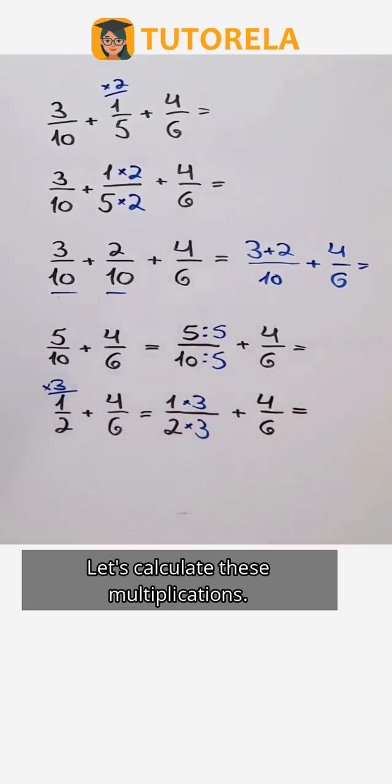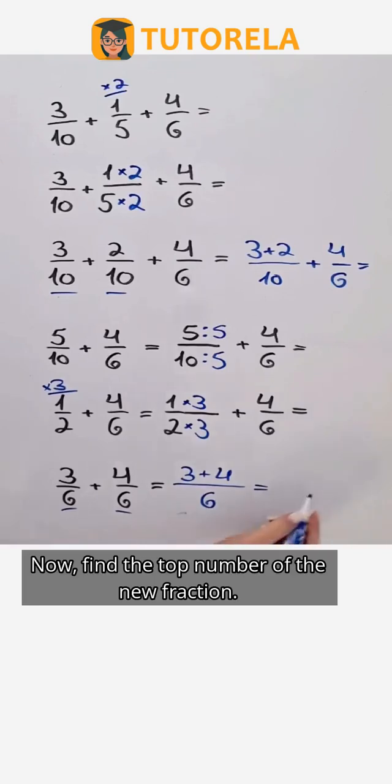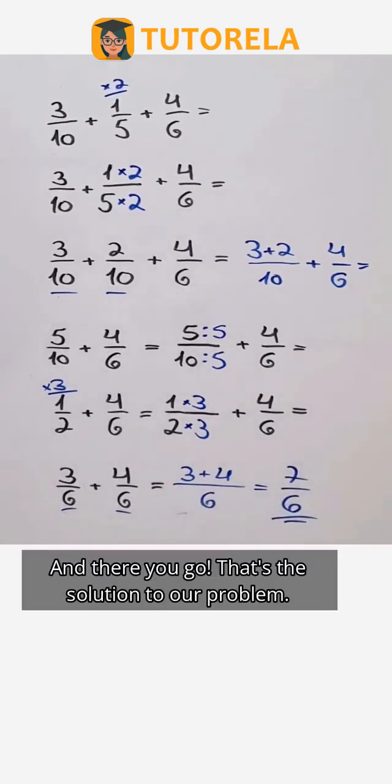Let's calculate these multiplications. Write the result with the common denominator of 6. Now find the top number of the new fraction, and there you go, that's the solution to our problem.